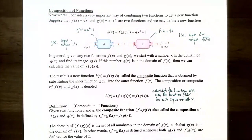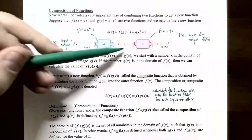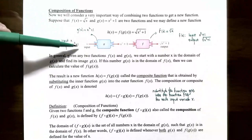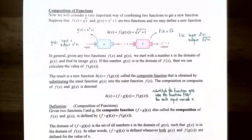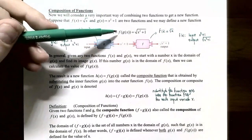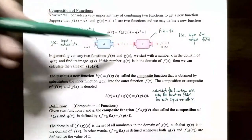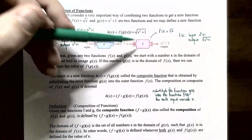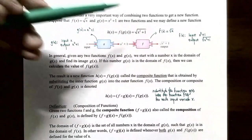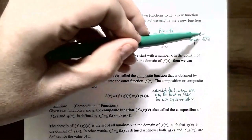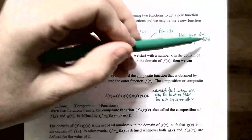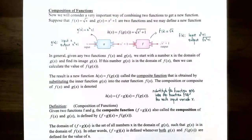Let's see how this is formed. The function g is acting on x first because it's the inside function. You input an x value into g, and g can be described as a verbal description, a table of values, a graph, or a formula. It outputs x² + 1. Now the outside function f acts on the output value of g. We input x² + 1 into f(x), and f outputs √(x² + 1). So f(x) = √x, because it takes whatever the input is and takes the square root of it.